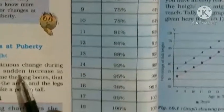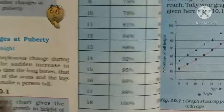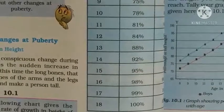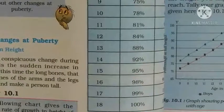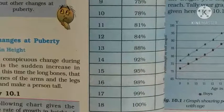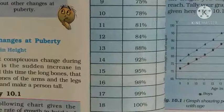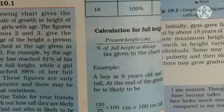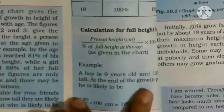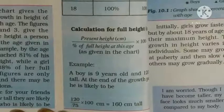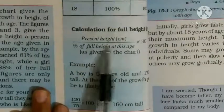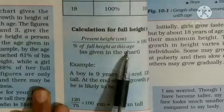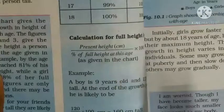इसका use आप अपने friends के साथ करके पता लगा सकते हैं कि आपकी class में कौन सबसे tall और कौन सबसे short student है। Calculation का तरीका यहाँ बताया गया है — formula है: height in centimeter upon percent of full height at this age, into 100।